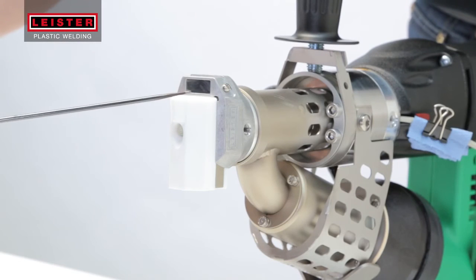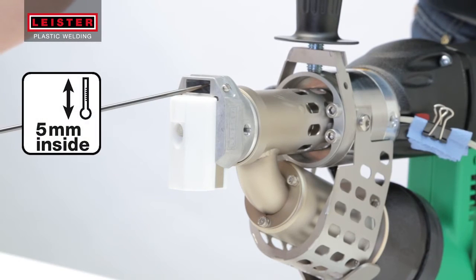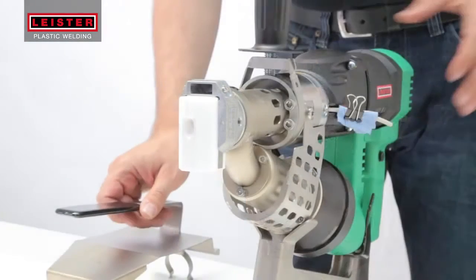Measure the air temperature at 5 millimeters in the preheating nozzle with a clean probe. By turning the red potentiometer, you can adjust the temperature as needed.